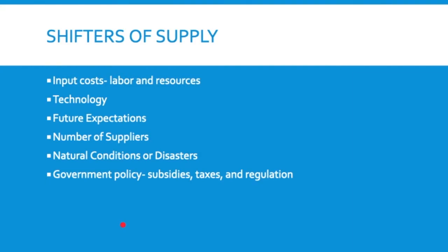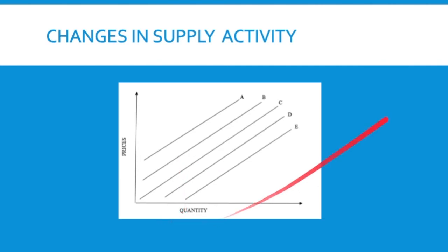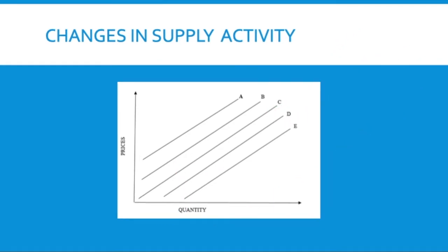Here are all the shifters of supply we talked about. Let's do an activity like we did with demand. Draw a vertical axis with price and a horizontal axis with quantity, and draw five supply lines labeled A, B, C, D, and E. Start your finger or pen on C. I'll give you scenarios and we'll see where we end up. Remember: moving to the right is always an increase in supply and moving to the left is always a decrease in supply.